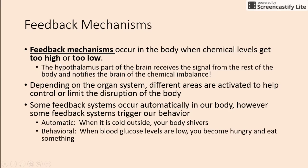Feedback mechanisms occur in the body when chemical levels get too high or too low. The key player in this is the hypothalamus, which is part of the brain that receives the signal from the rest of the body and notifies the brain of the chemical imbalance. Depending on what organ system is affected, different areas are activated to help control or limit the disruption of the body.